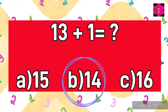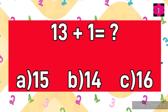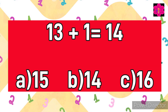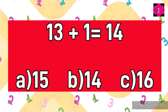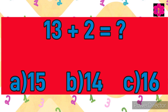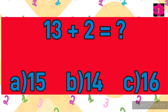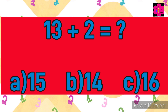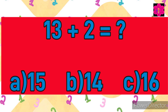The correct answer is B) 14. 13 plus 1 is equal to 14. Your next sum is: 13 plus 2 is equal — your options are A) 15, B) 14, and C) 16. Which one is correct? Your time starts now!